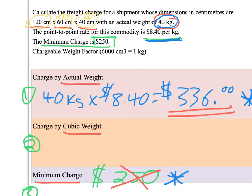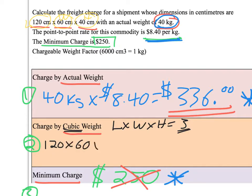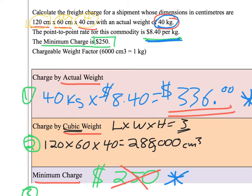To calculate cubic weight, the first step is to figure out the cube. Going back to grade school: length times width times height gives us a cubic measurement. Staying consistent in centimeters: 120 × 60 × 40 = 288,000 cubic centimeters. That's the volume of space the shipment will actually take up.